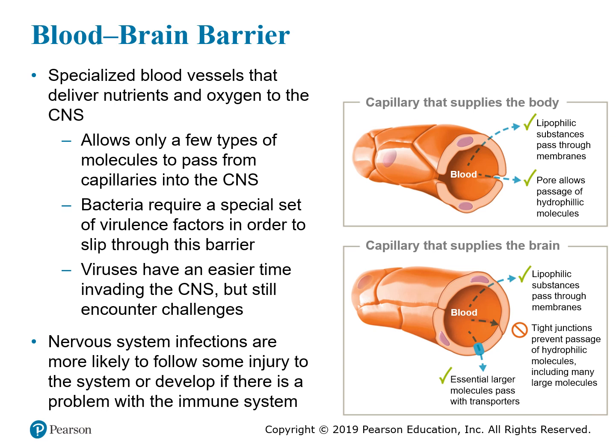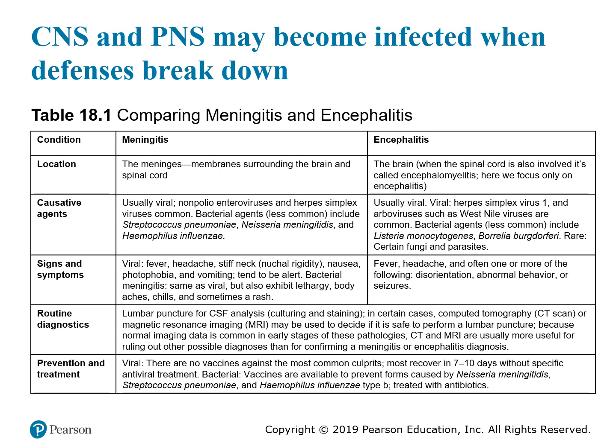Viruses have a somewhat easier time invading the central nervous system, but they do encounter challenges. Nervous system infections are more likely to follow some type of injury to the central nervous system, or if there is a problem with the immune system that allows them to cross the blood-brain barrier. Both the central and peripheral nervous systems can become infected when there is a defense breakdown. We look at these as meningitis versus encephalitis.